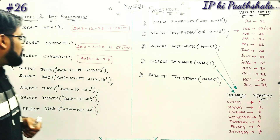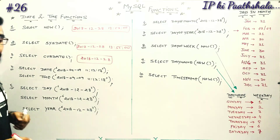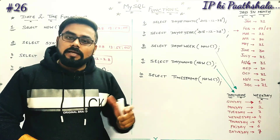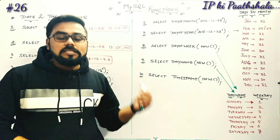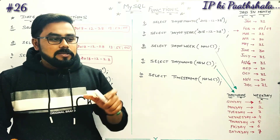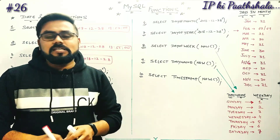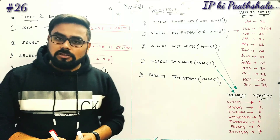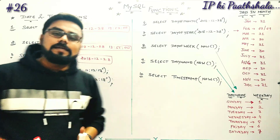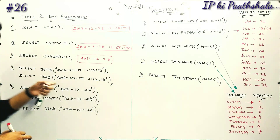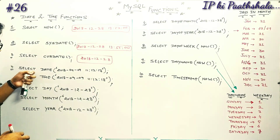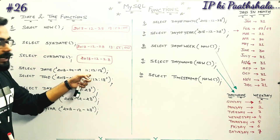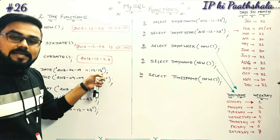Let's talk about another function. These functions are in sequence and similar in form. Now I will use the SELECT DATE() function with a specific datetime input — for example, DATE('2018-09-09 11:12:13'). The DATE() function extracts only the date portion from a given datetime value.